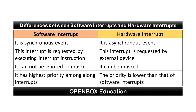Hardware interrupt is requested by an external device. Software interrupt cannot be ignored or masked. Hardware interrupt can be masked — that is, it may be accepted or rejected depending on the IF flag.